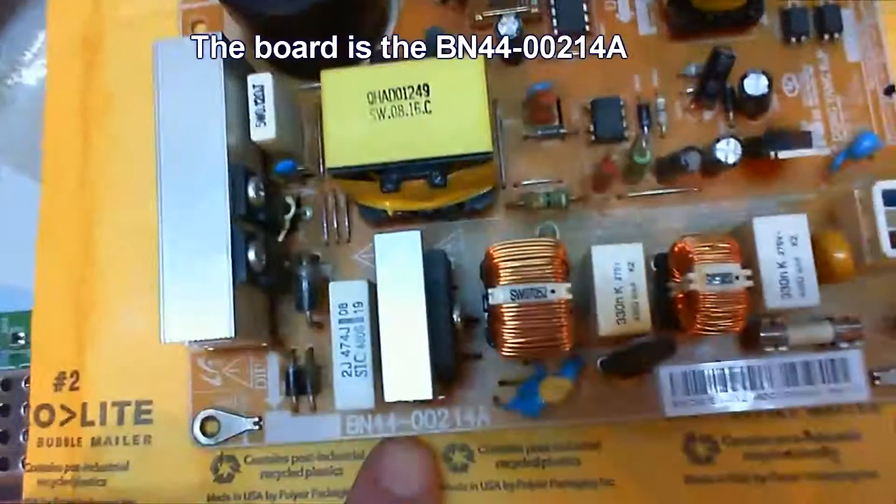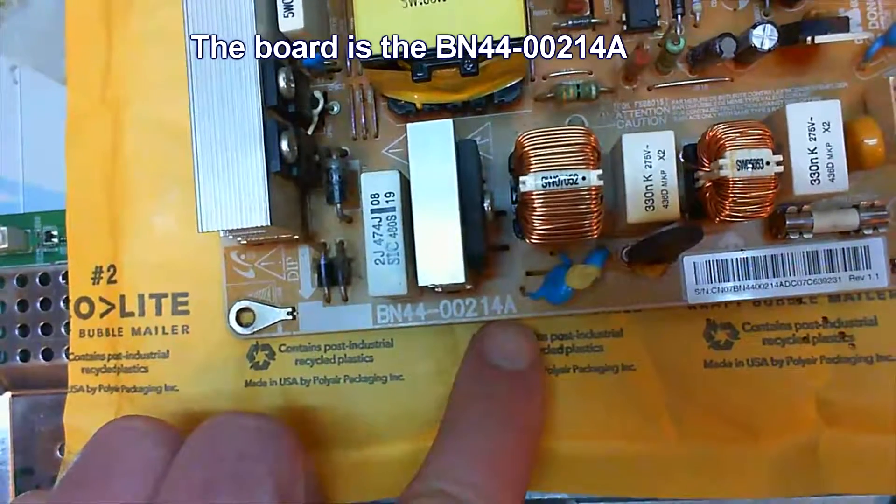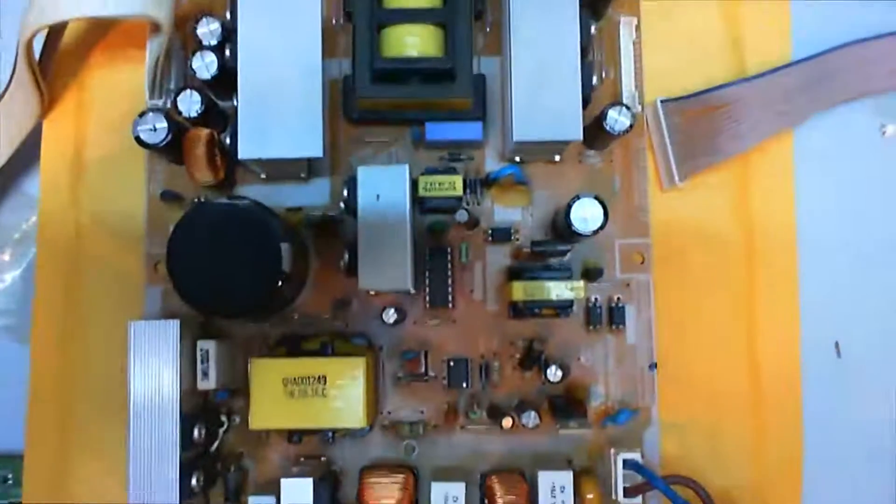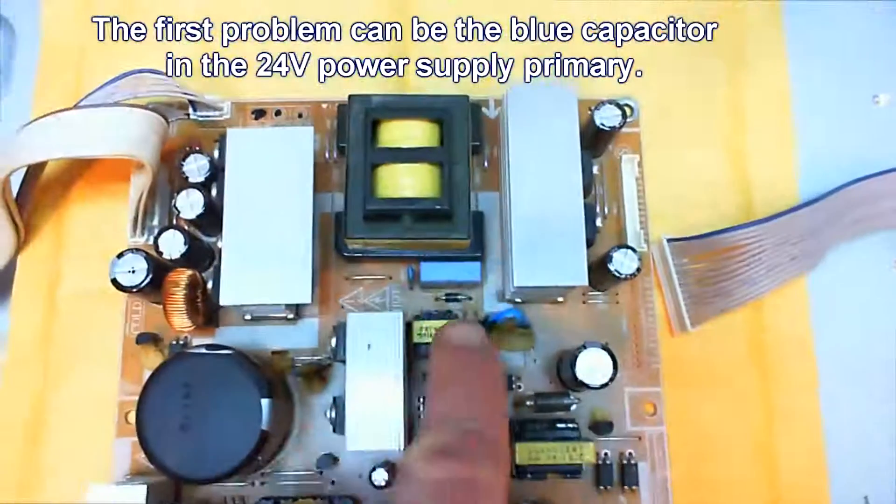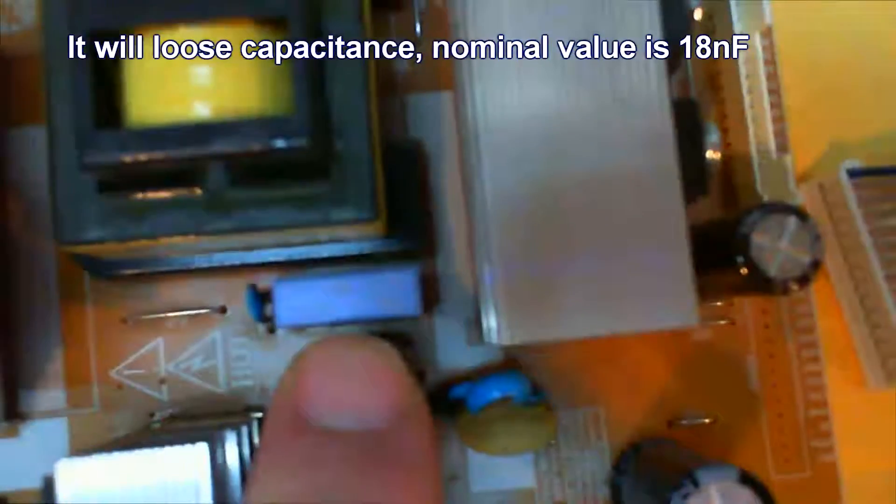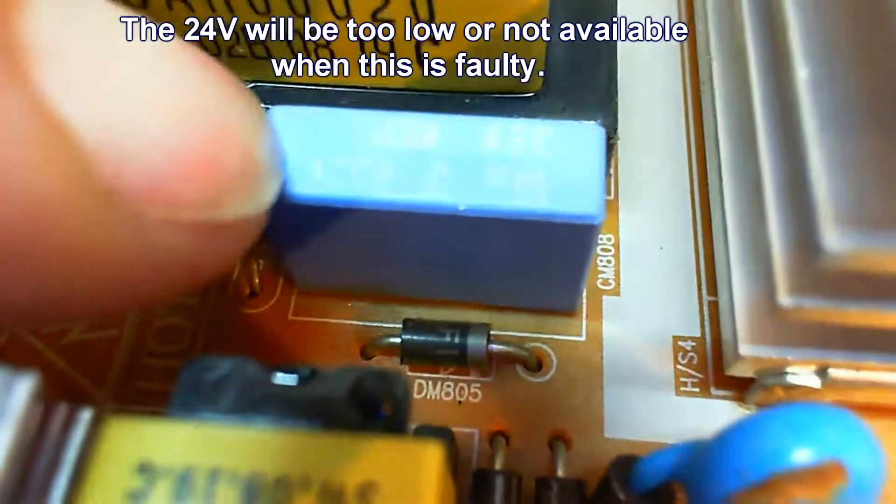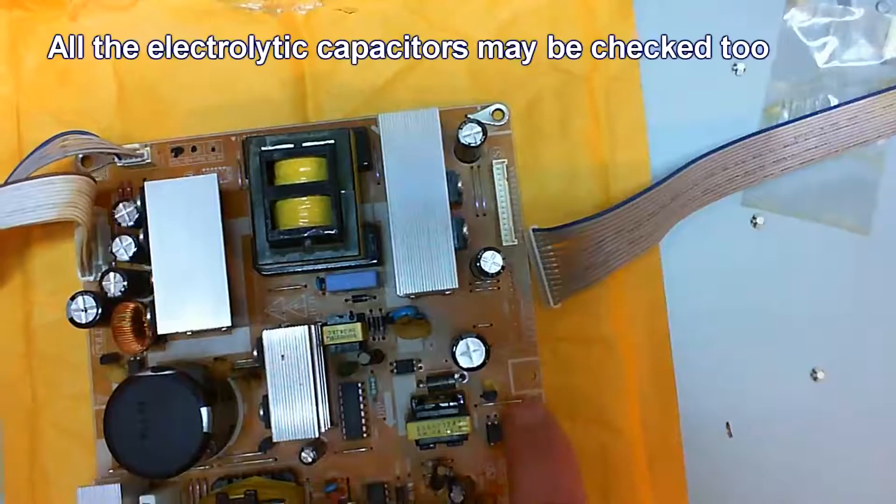The board we are talking about here is the BN4400214. The first problem may be this capacitor here. It's a high voltage capacitor in a resonant power supply. It's 18 nF and it will lose capacity when it's faulty.